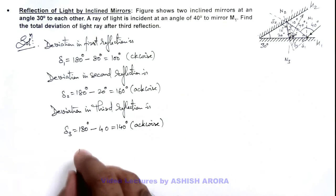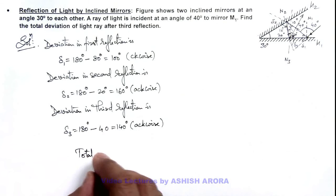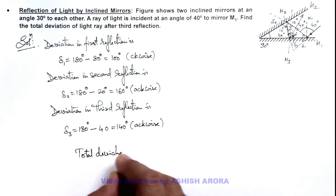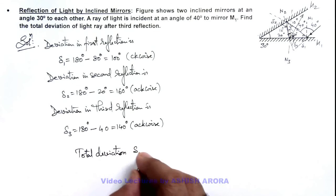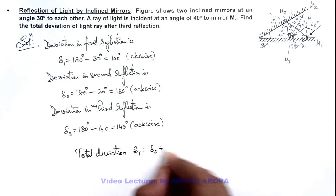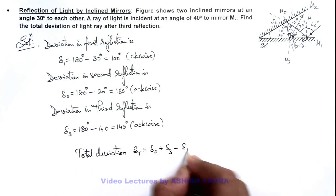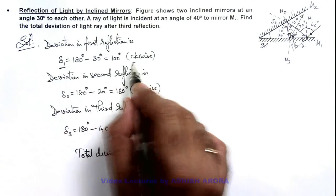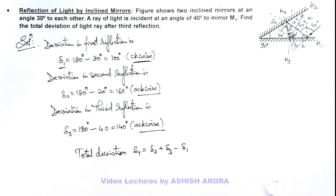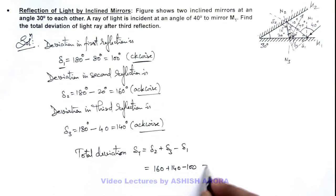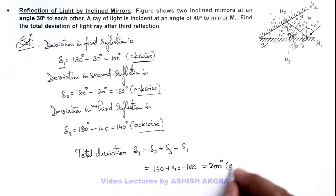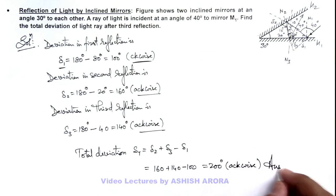So we can calculate the total deviation of the light ray as the sum of all 3 deviations. Total deviation is delta 2 plus delta 3 minus delta 1, because the first deviation is clockwise and these two are anti-clockwise. So this will be 160 plus 140 minus 100, which is 200 degrees. The total anti-clockwise deviation is the final result of this problem.